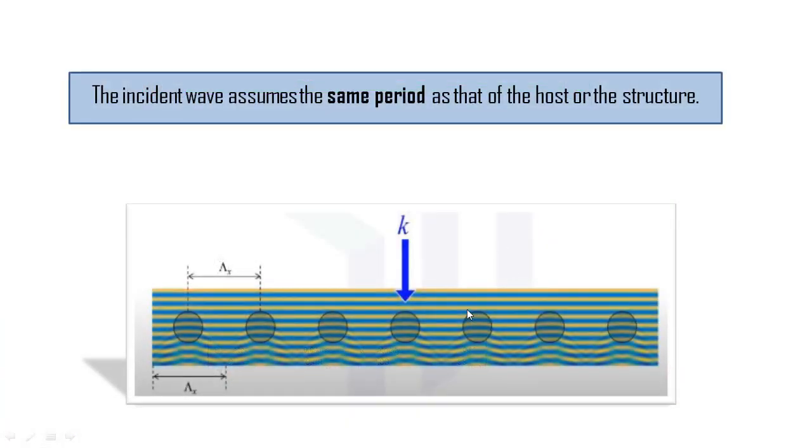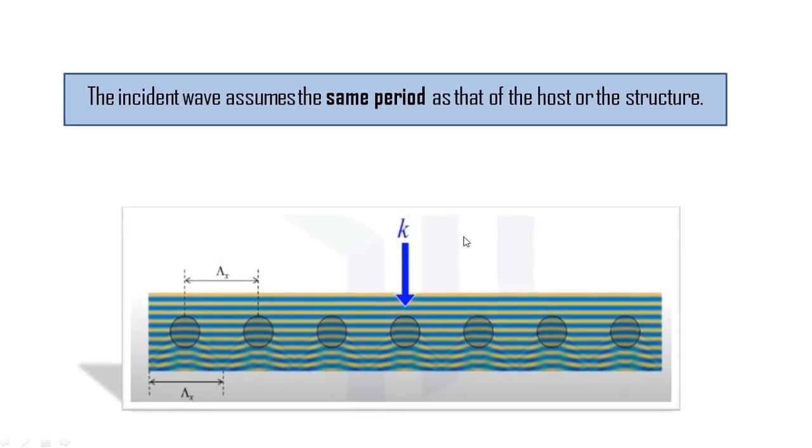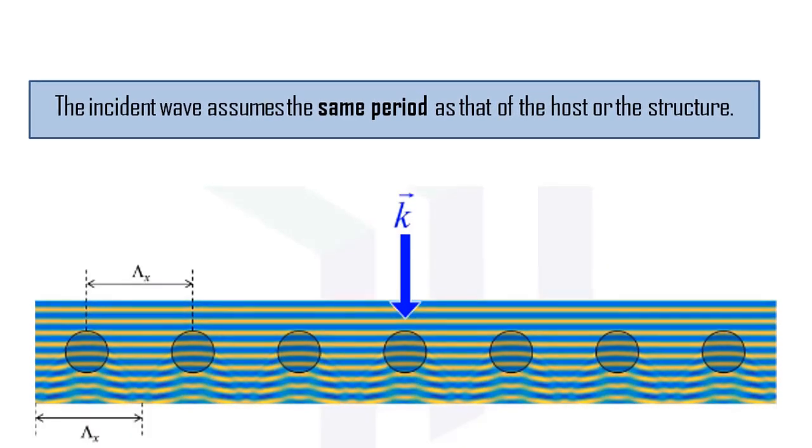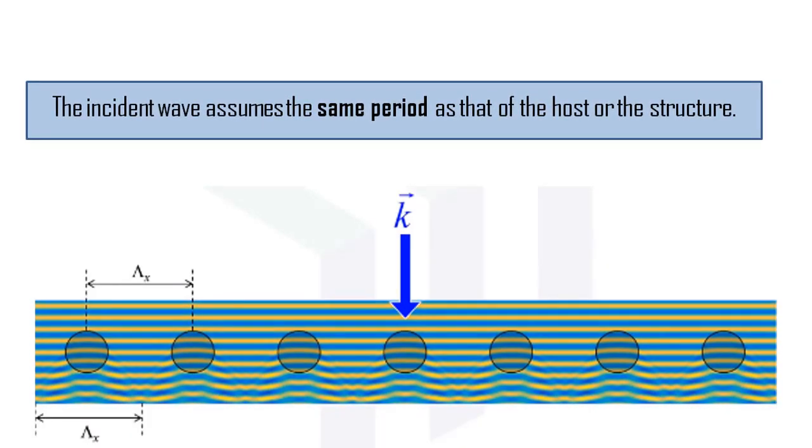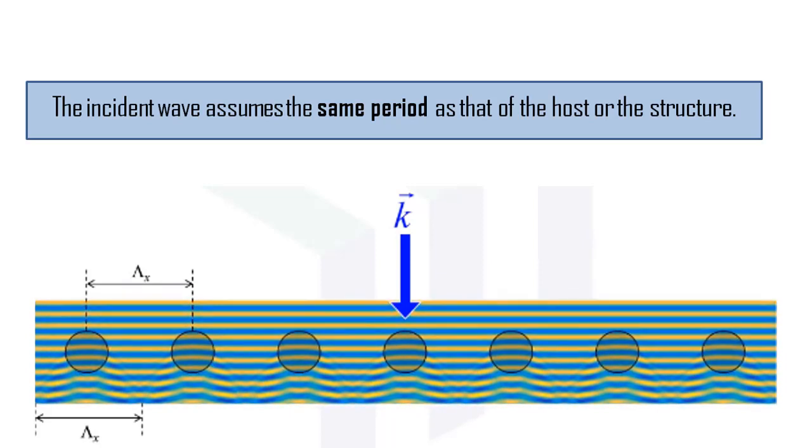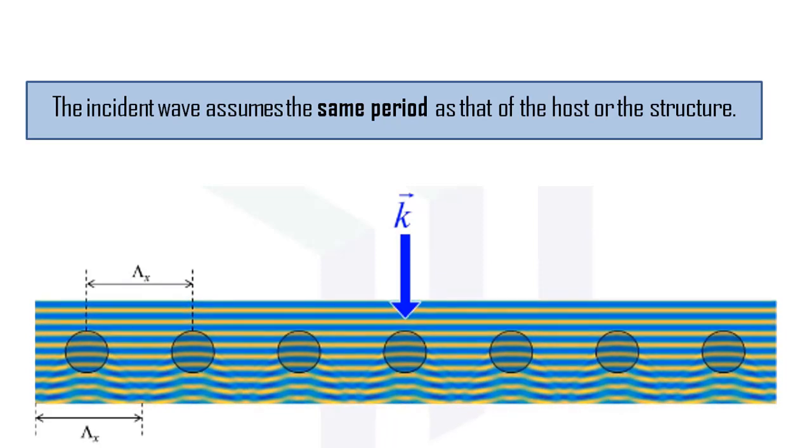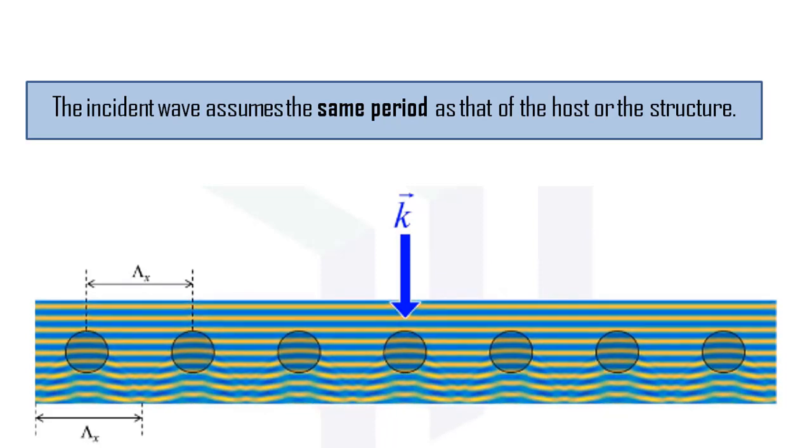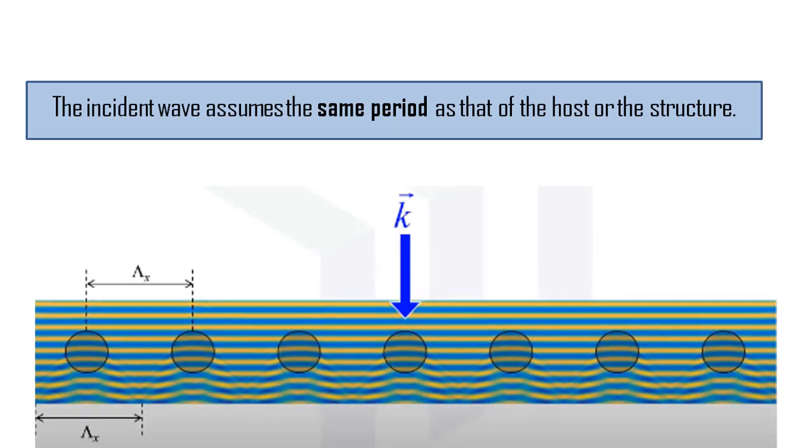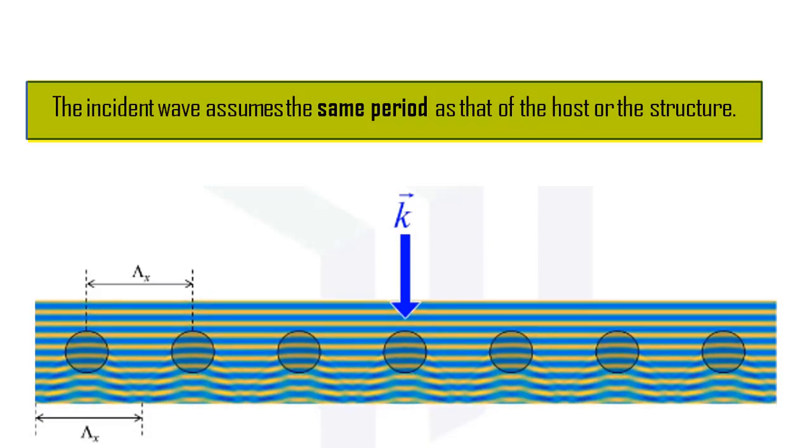This is yet another FDTD animation of a plane wave incident on a periodic structure. The plane wave has a wave vector k and is incident from the top. A very important observation is to be made. The incident wave assumes the same period as that of the host or the structure.